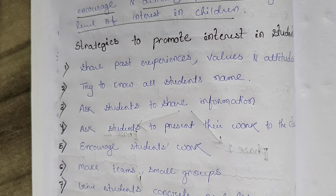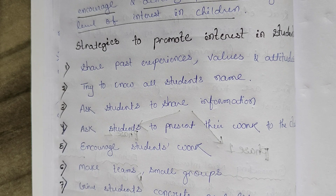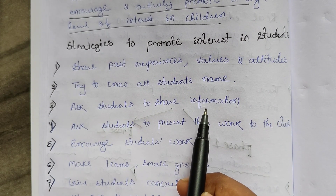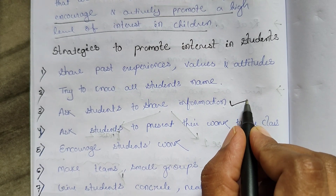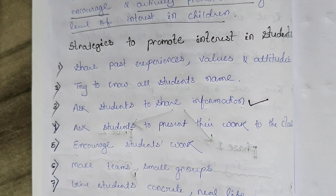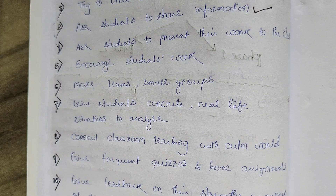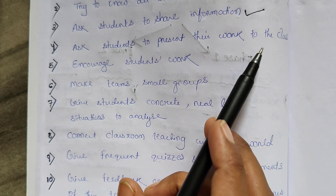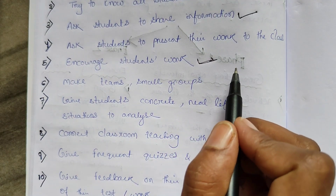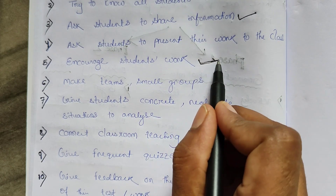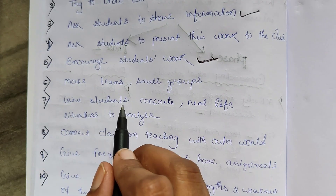Students will feel good that the teacher knows their name. Ask students to share their information, their knowledge, and their skills — what they know. Don't only teach and share your own knowledge. Encourage students, ask them to present their work in the class, encourage their work, and encourage them to work together. Students' questions and work should always be encouraged. Make teams and small group discussions.